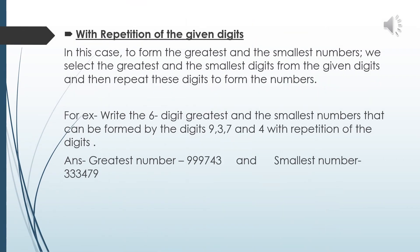Second — with repetition of the given digits. In this case, to form the greatest and smallest number, we select the greatest and smallest digit from the given digits and repeat them to form the numbers. For example, write the six-digit greatest and smallest number that can be formed by the digits 9, 3, 7, and 4 with repetition. The question is: we have only four digits but need to form a six-digit number.